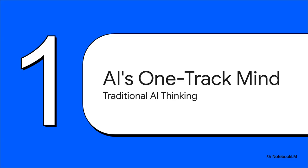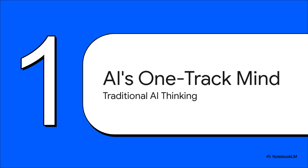To really get why this parallel thinking thing is such a big deal, we've got to look at how most AI models are thinking right now. And, well, they kind of have a one-track mind. The standard method out there is called chain of thought. It's logical, it's straightforward. The AI starts at step one, goes to step two, then three, and just keeps going in a straight line until it hits an answer.